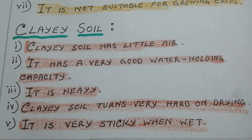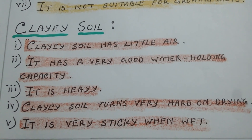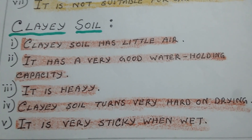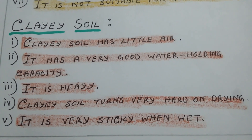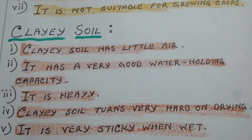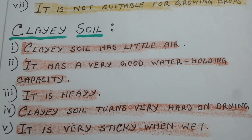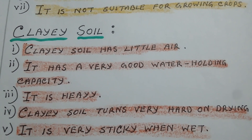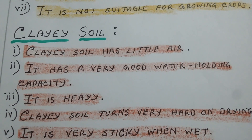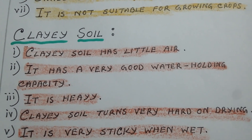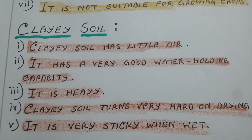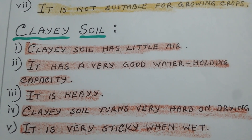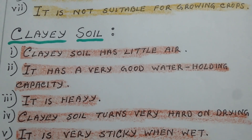So clay soil has little air. Clay soil has very small and tightly packed clay particles, making it less porous, so it has very good water holding capacity. Clay soil gets water-logged easily during the rainy season and turns very hard on drying.